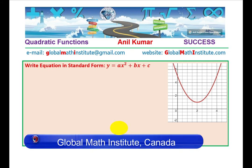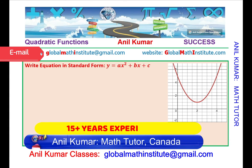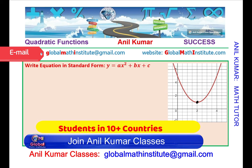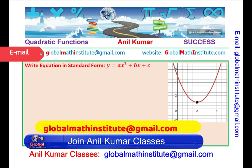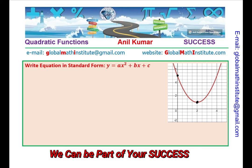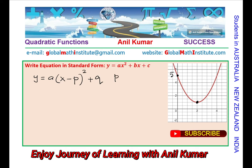Let's begin with question number one. We have a parabola which opens up and does not have any x-intercept, so we look at the vertex and a point that helps us find the value of a. We can read the y-intercept, which here is 5. Since we know the vertex, we start with y equals a times (x minus p) squared plus q, where (p, q) is the vertex.